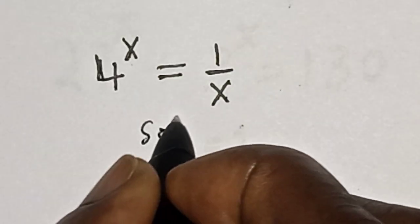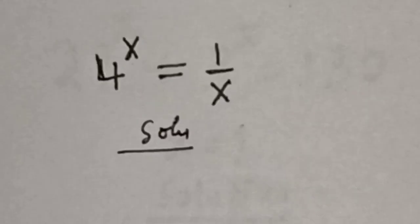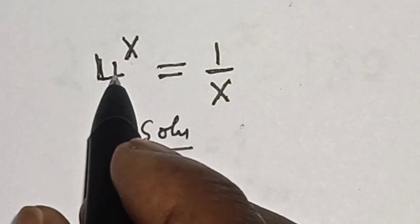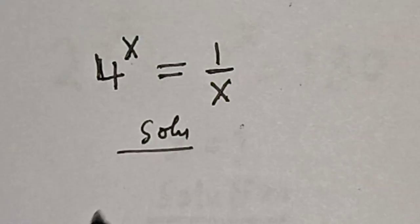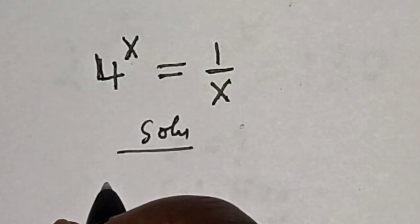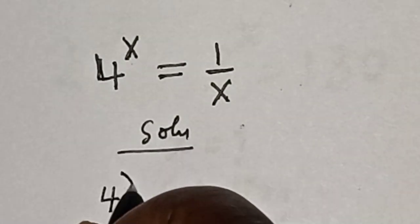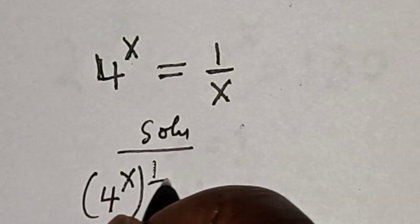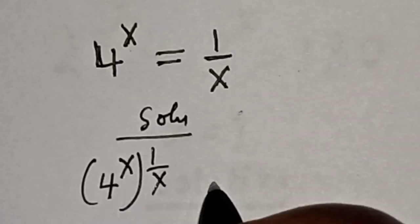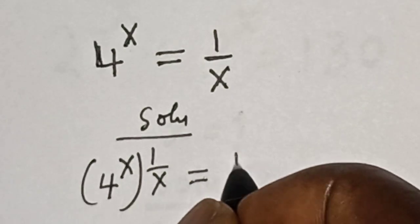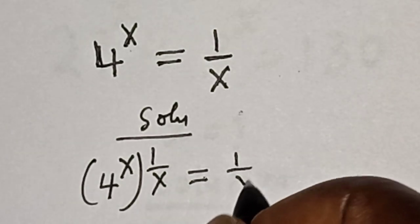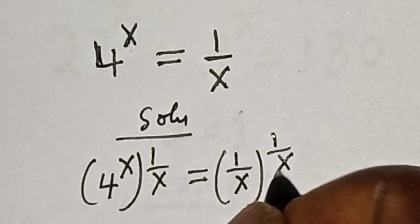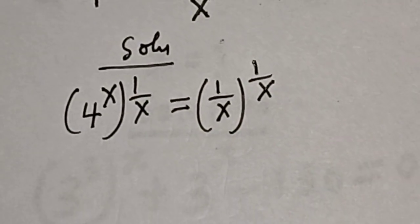For the solution, let's take the power of both sides by 1 over s. That is: 4 to the power of s, all raised to the power 1 over s, is equal to 1 over x, all raised to the power 1 over x.